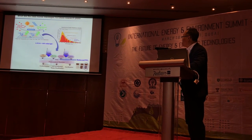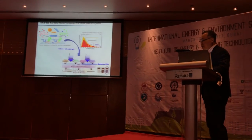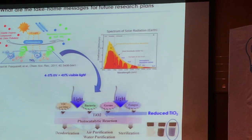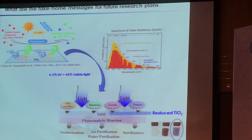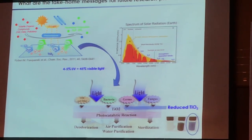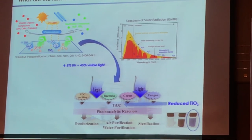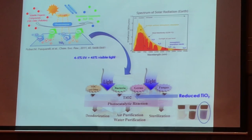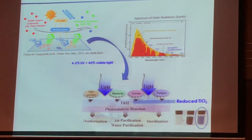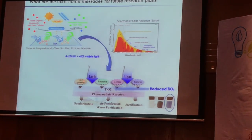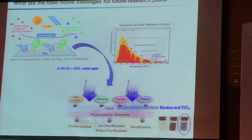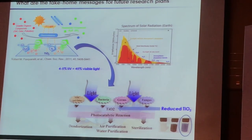Through this new finding, we are now working on the reduction of CO₂ using our solar system — not just UV light. We are also trying to use commercially available materials for CO₂ reduction. Additionally, we are working on reducing VOC, bacteria, germs, and fungus under LED light.